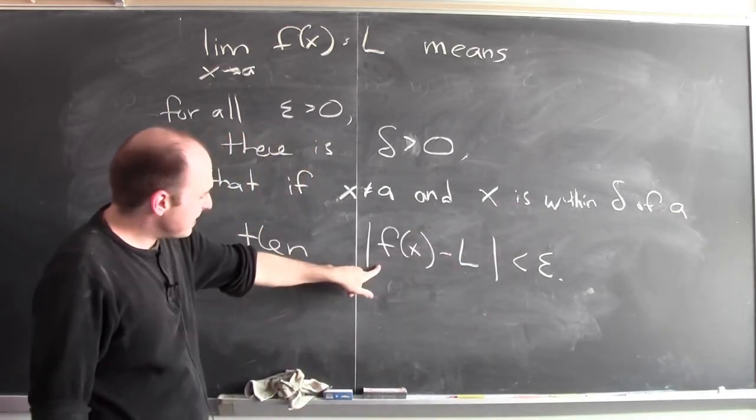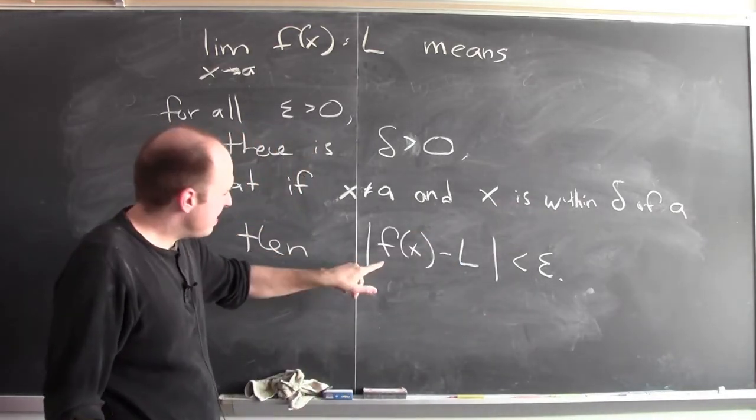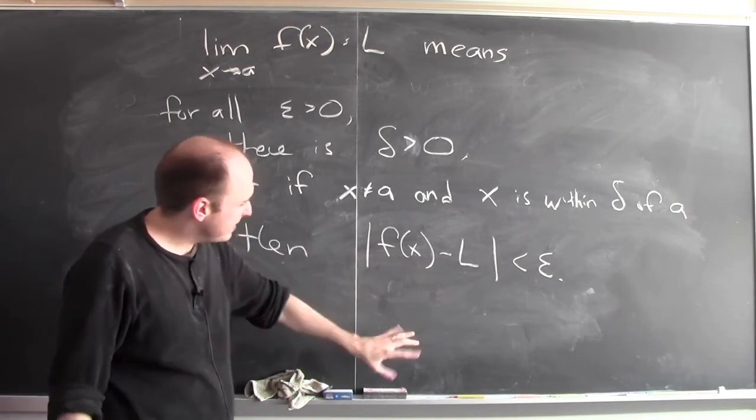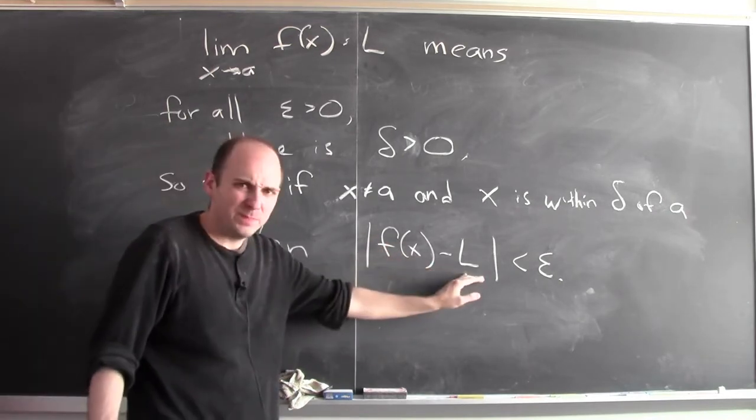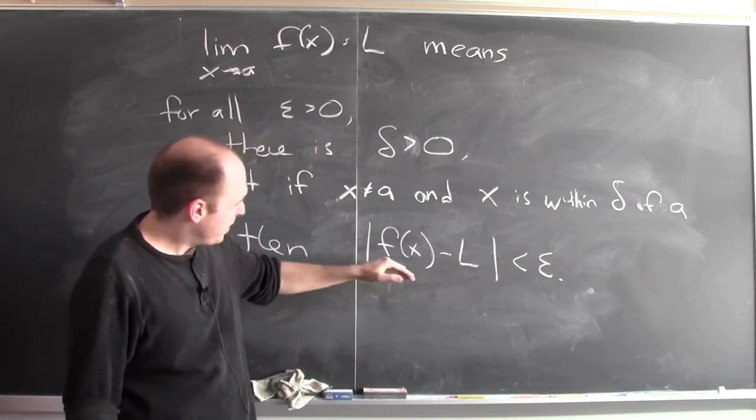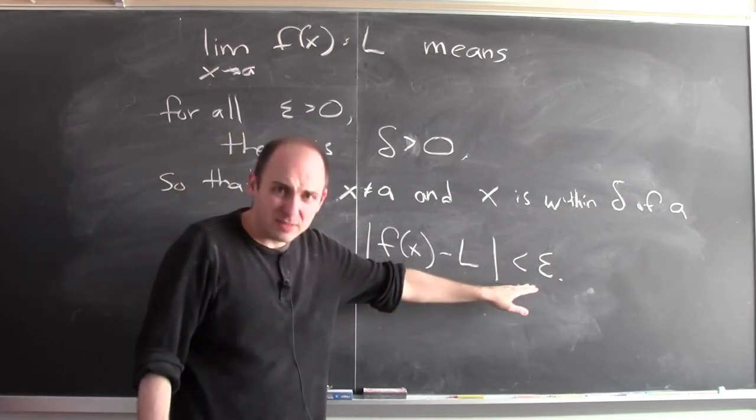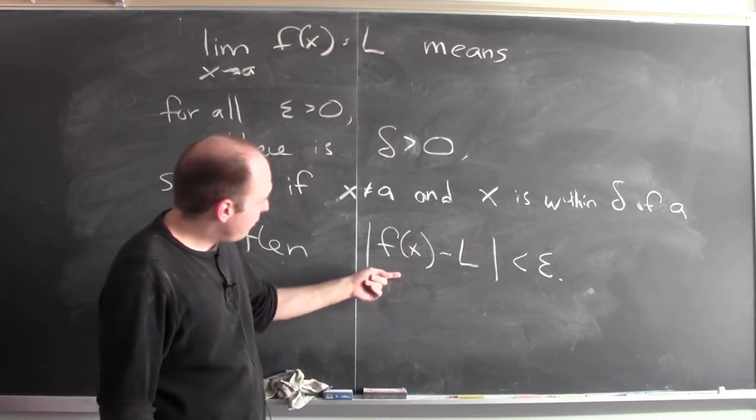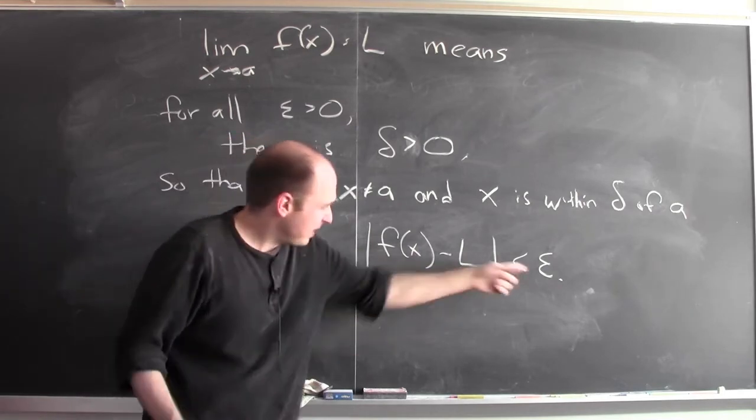And I can do the same thing to this absolute value of a difference. The absolute value of f(x) minus L—that's the distance between f(x) and L. And to say that the distance between f(x) and L is less than epsilon means that f(x) is within epsilon of L.